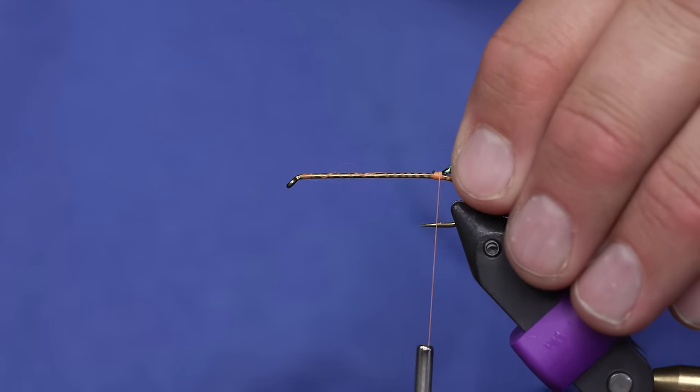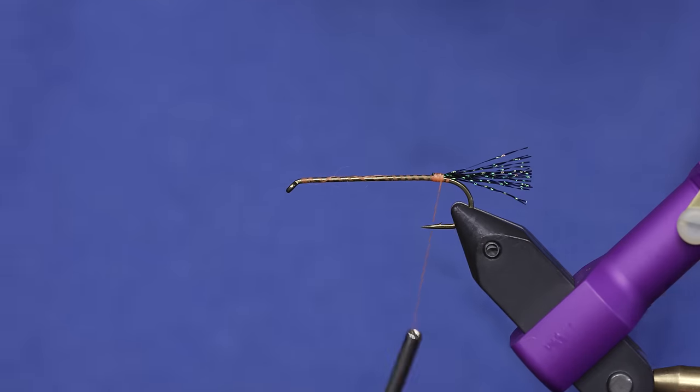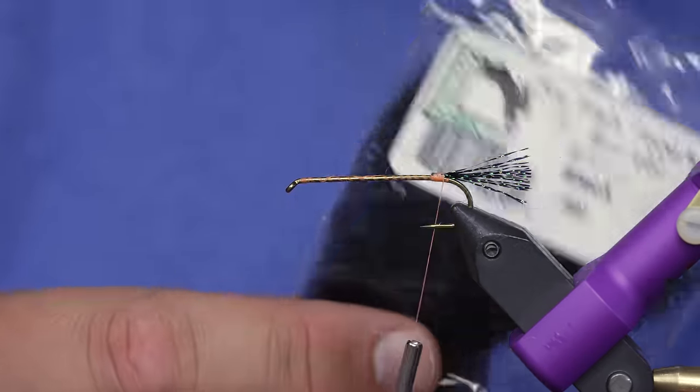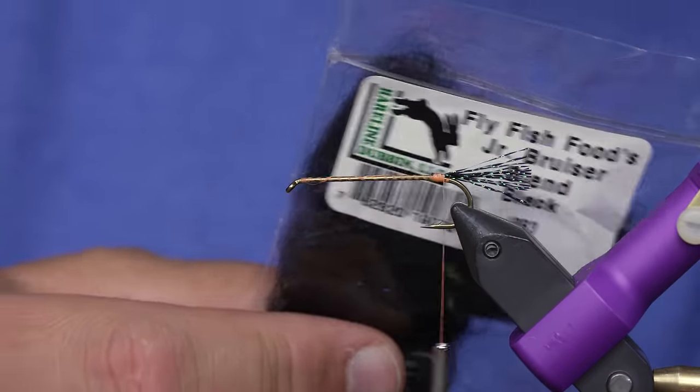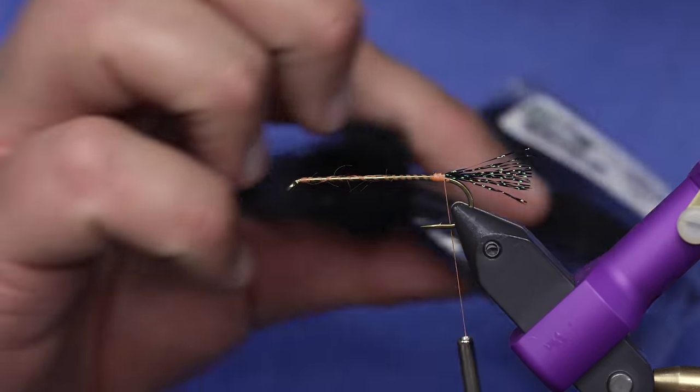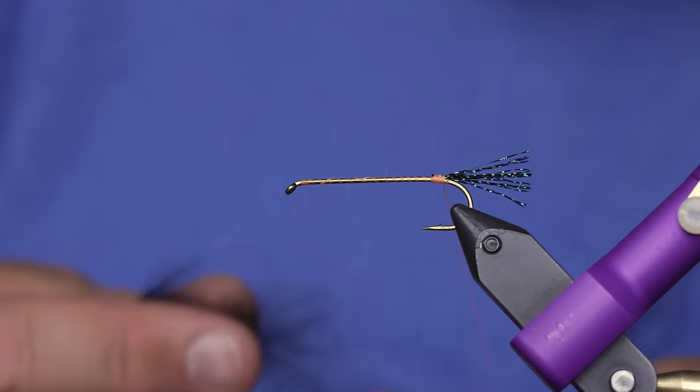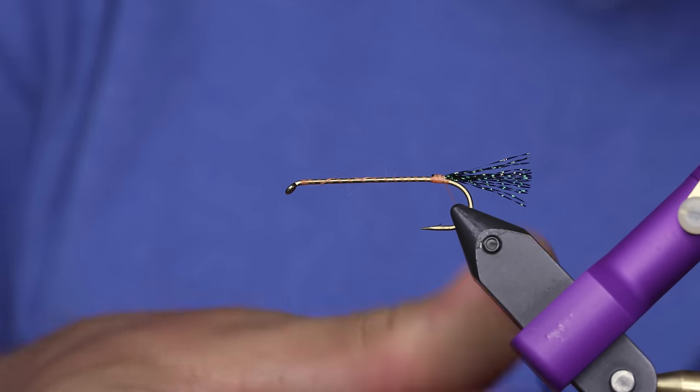Alright, so once I have the crystal flash tied in, I'm gonna take some dubbing. For this I've chosen Bruiser Blend. Little life hack: this is excellent dry fly dubbing. It's an acrylic fiber, doesn't absorb water, so keep that in mind. Mostly we just do streamers with it to build heads, but what we're gonna do is we're just going to dub the whole hook shank. We're gonna dub it forward and back. And Brig, this is your cue to speed this up because it's going to be boring.